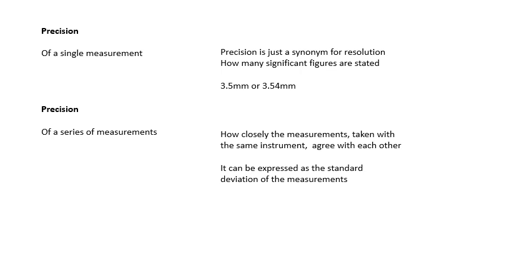It's how many significant figures are stated. So if you've got 3.5 millimeters, 3.54 millimeters is more precise. It's basically how many sig figs there are and that is for a single measurement.